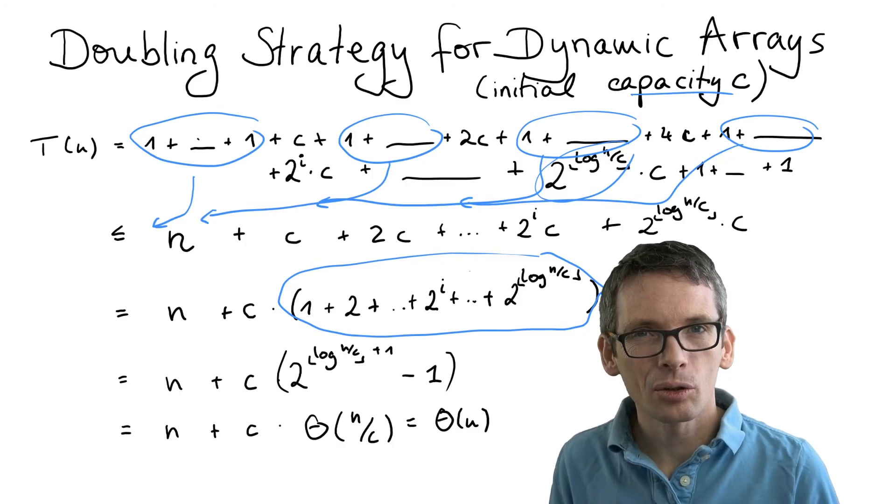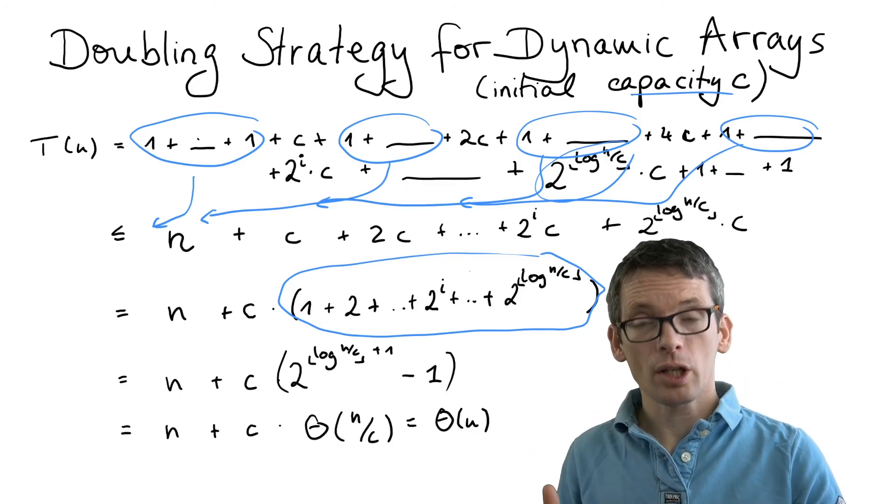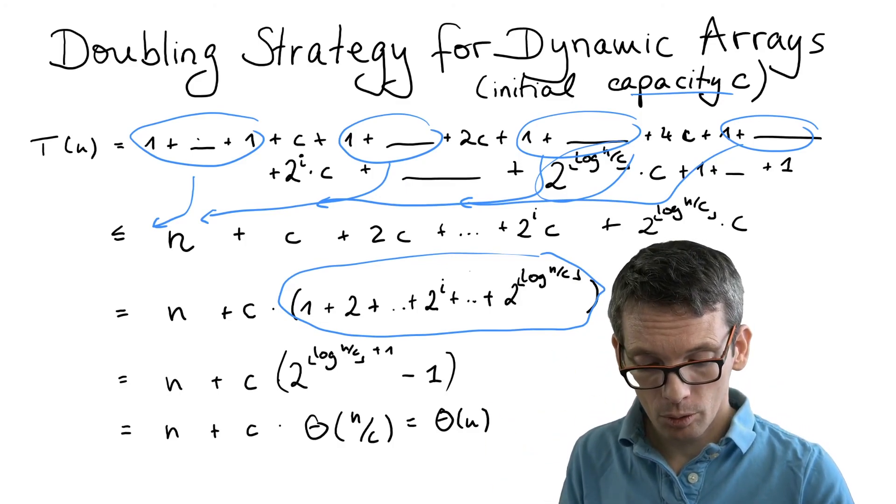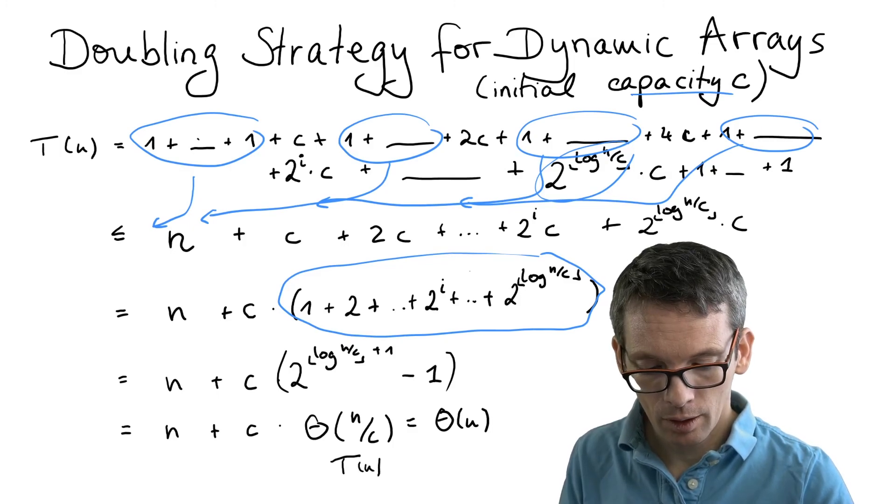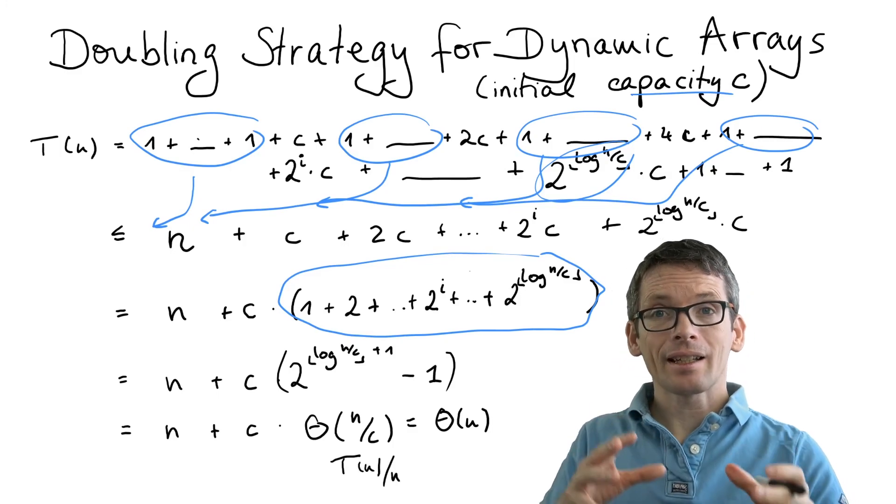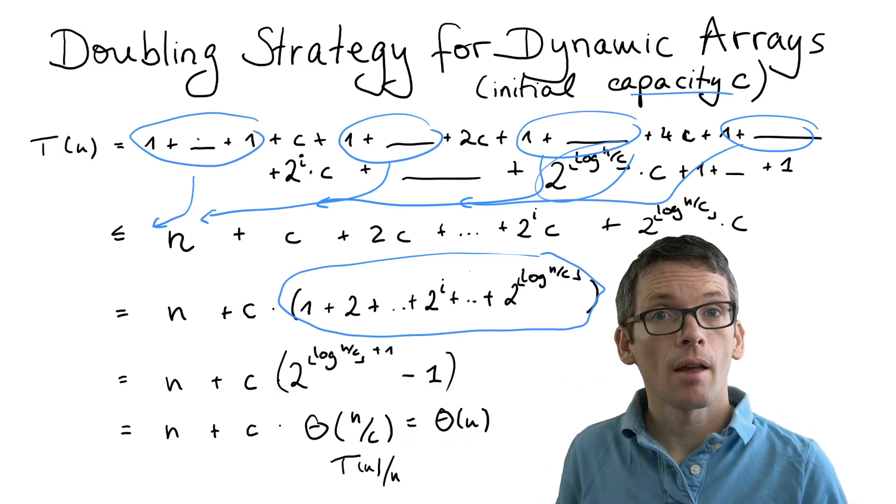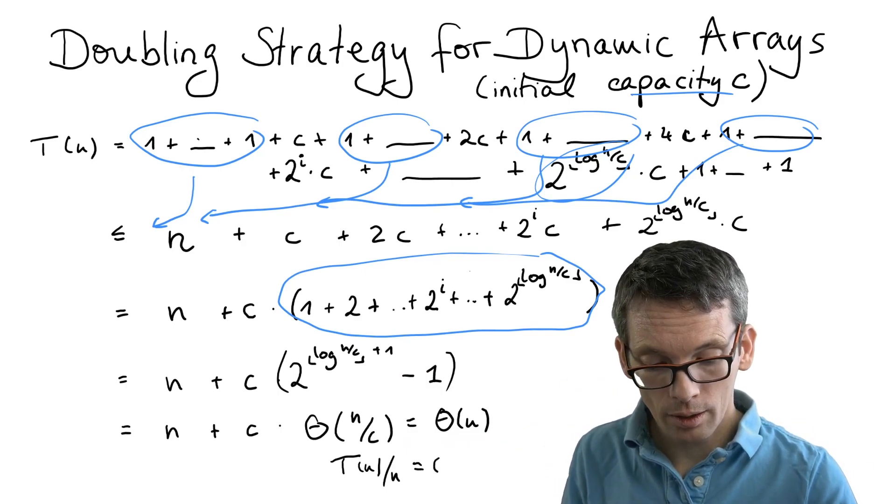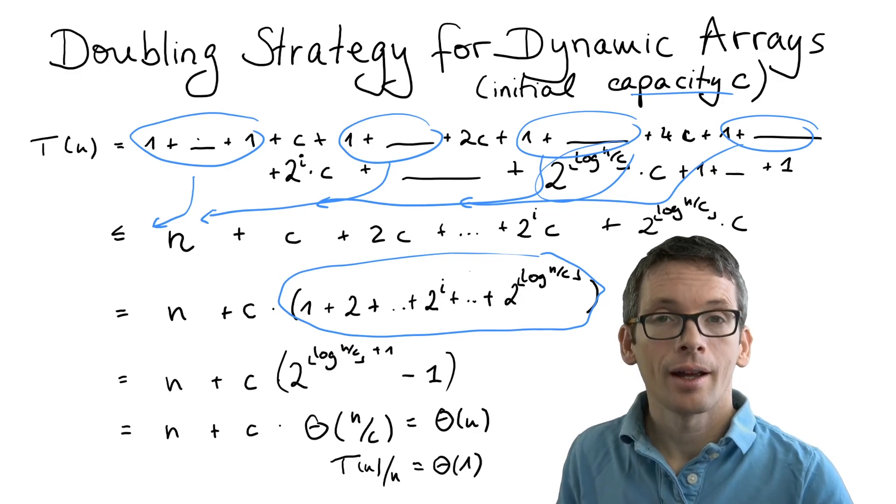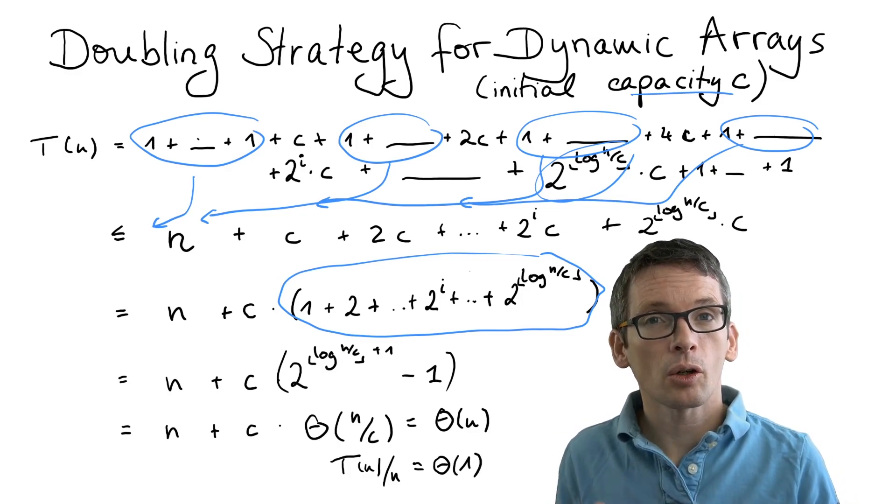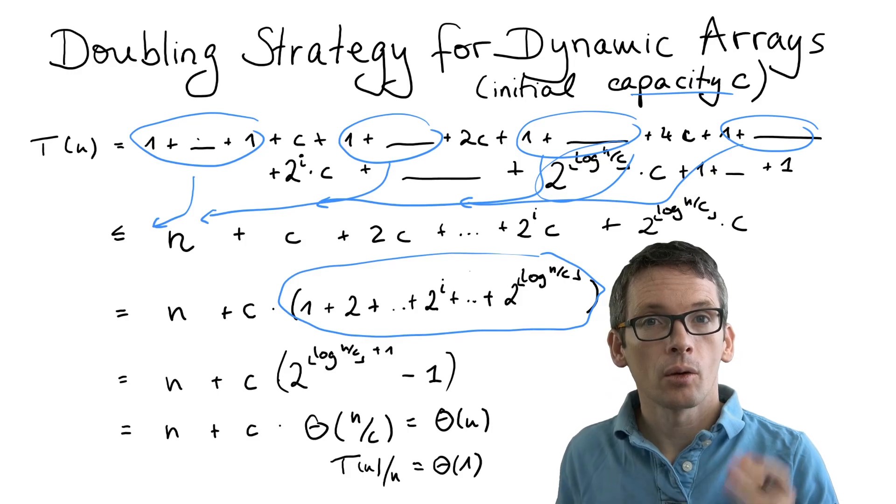We can now conclude that the amortized running time per operation, which is simply this total running time, T of n divided by n, that is theta of n divided by n. So that is simply theta of 1. And with this we can conclude that the doubling strategy works well.